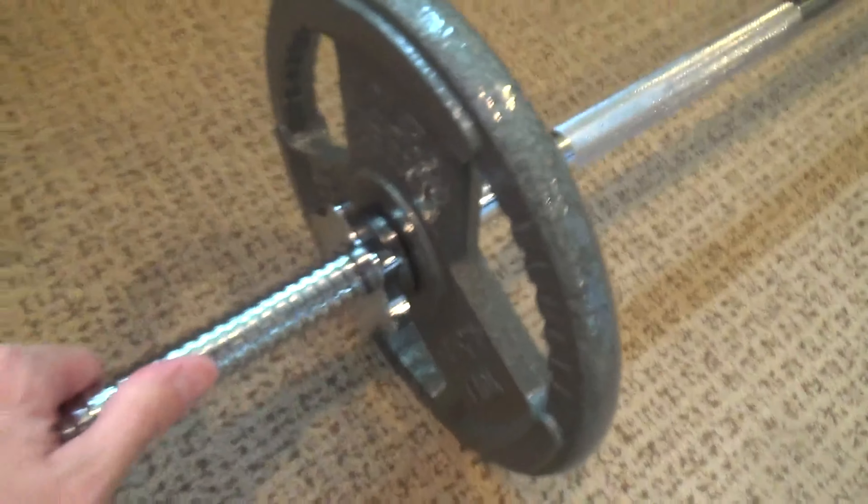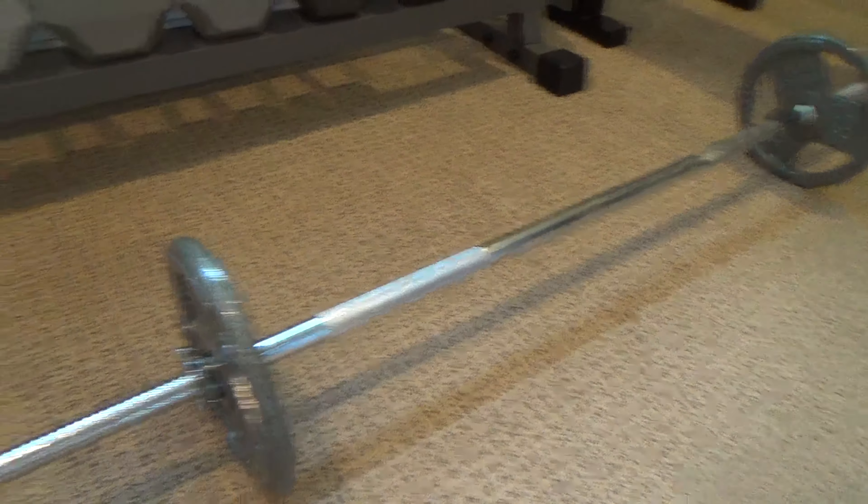These are standard plates with a 1 inch hole that fit on a standard bar that is 1 inch in thickness, versus an Olympic bar which is 2 inches thick and uses weight plates with a 2 inch hole.